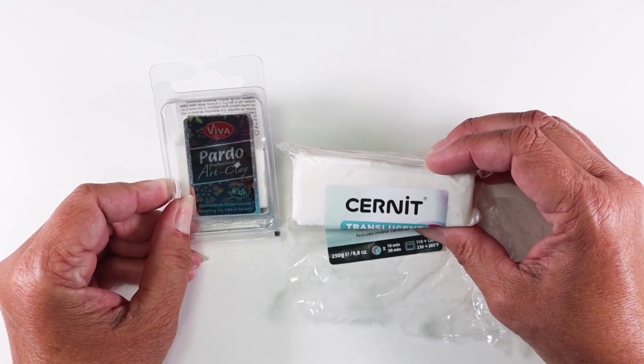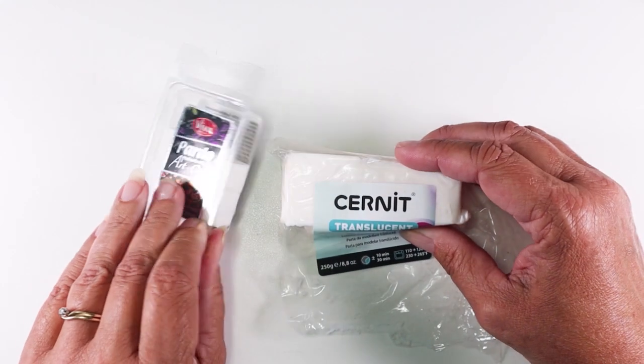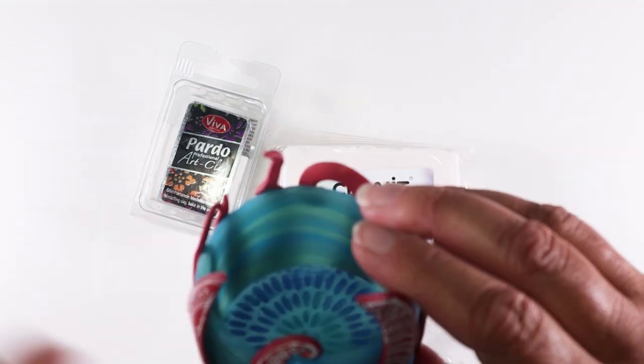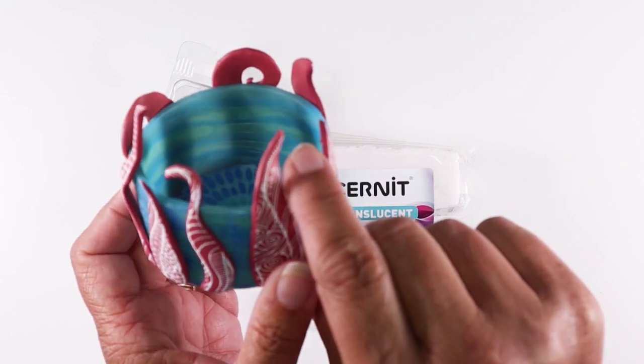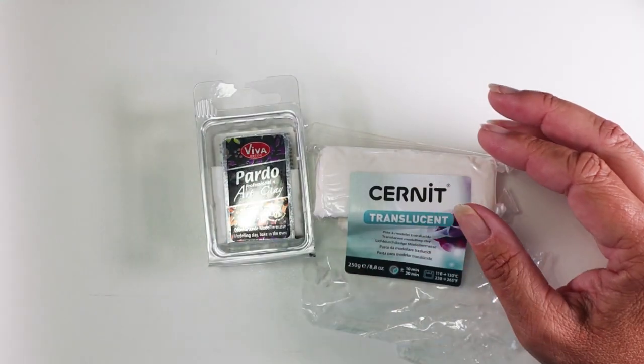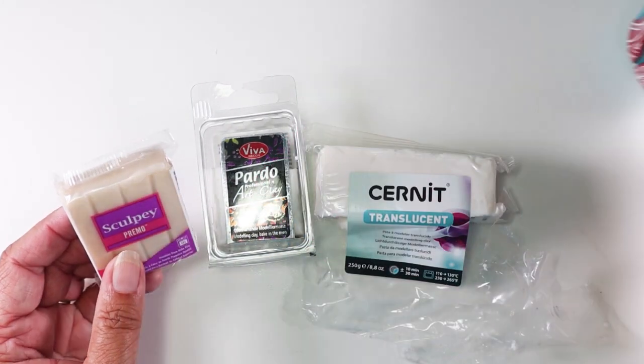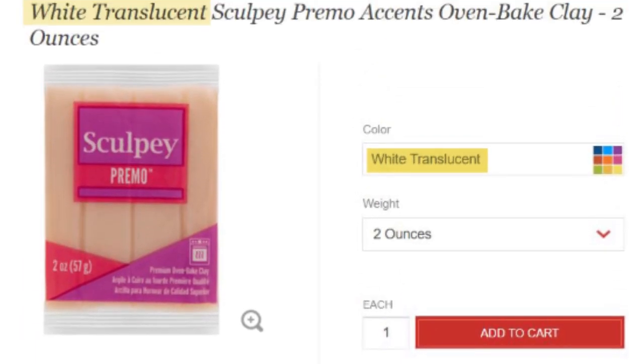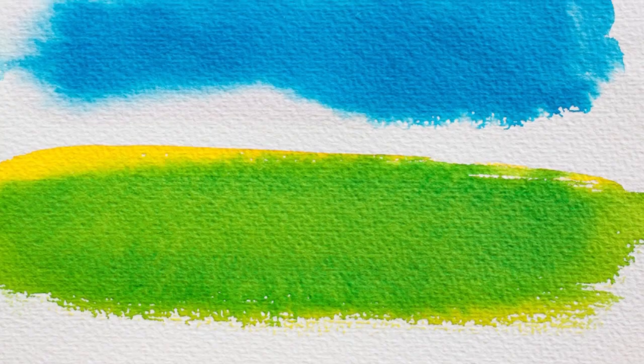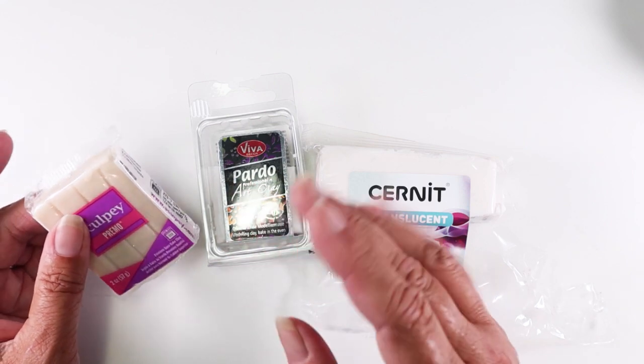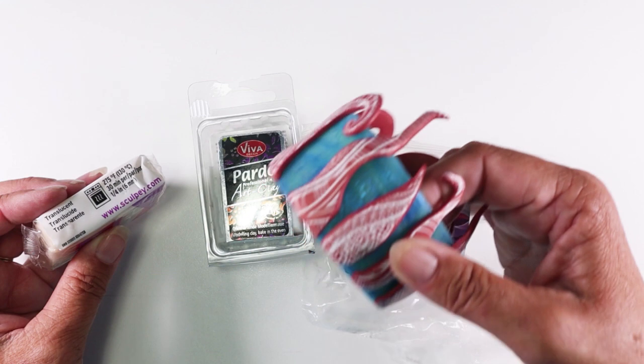Now my two favorite brands of translucent clay are Cernit and Pardo. You will notice that they both look white in the package, but after baking, they have a translucency. These can be harder to find, so if you can only find Sculpey Primo, if you want to use a blue color like I'm doing here, be sure that you get the white translucent. This plain old translucent has a weird yellow tint, so your blues will end up looking more green. If you're doing something orange or yellow, then you can use the plain translucent, but if you want blue, go for white translucent.